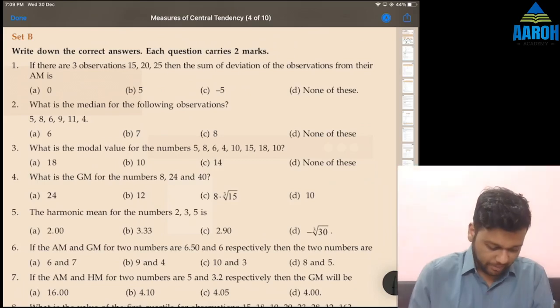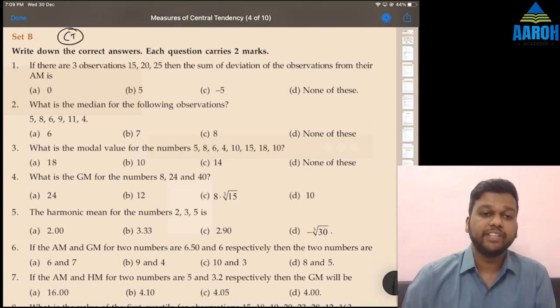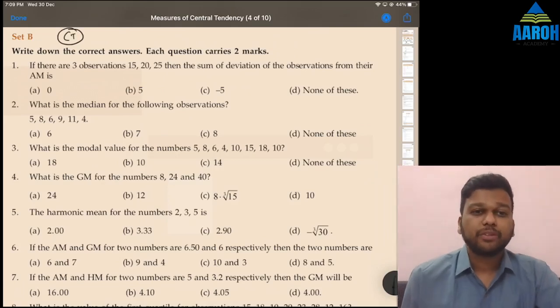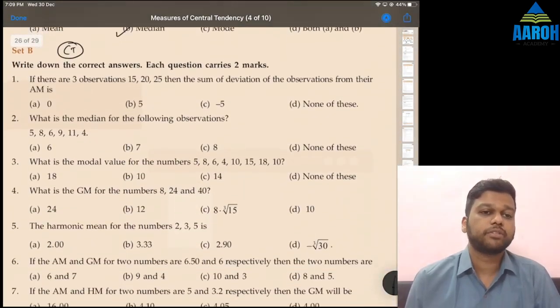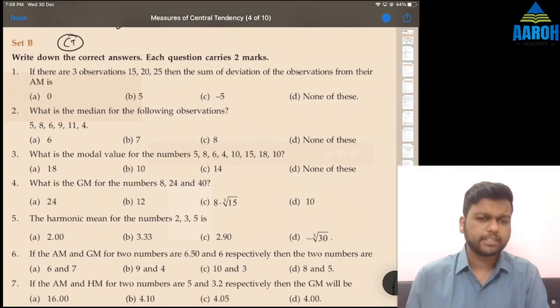Okay, so let's start with Set B of measures of central tendency. Now this exercise is based on calculations. Set A was based on theoretical questions. So Set B is based on calculations.